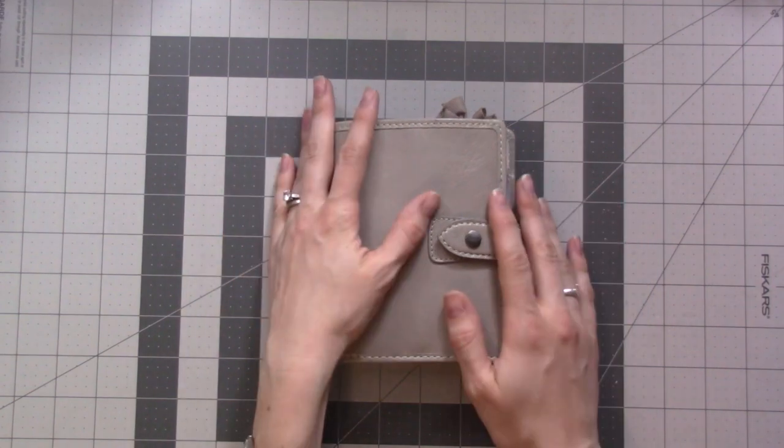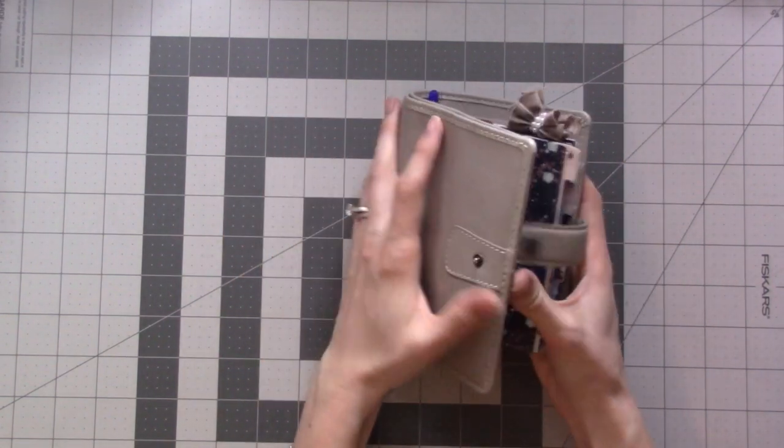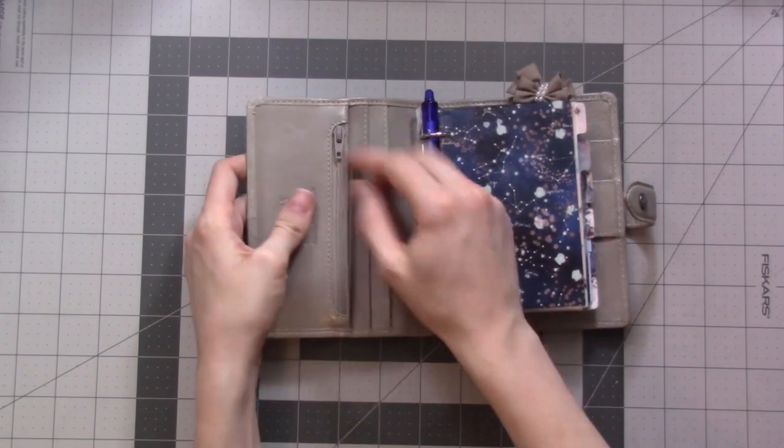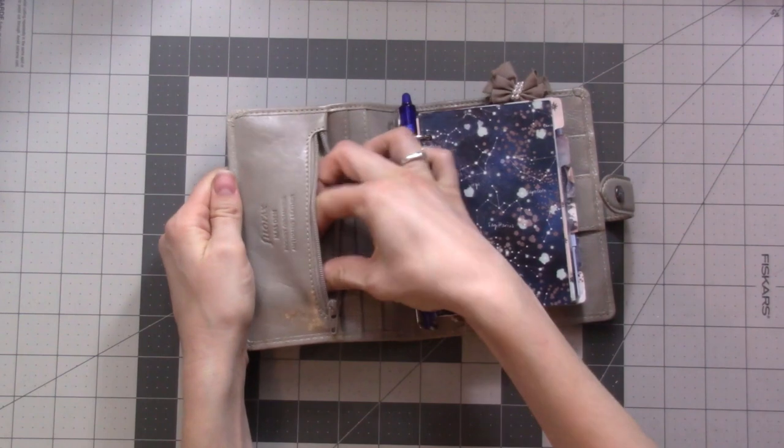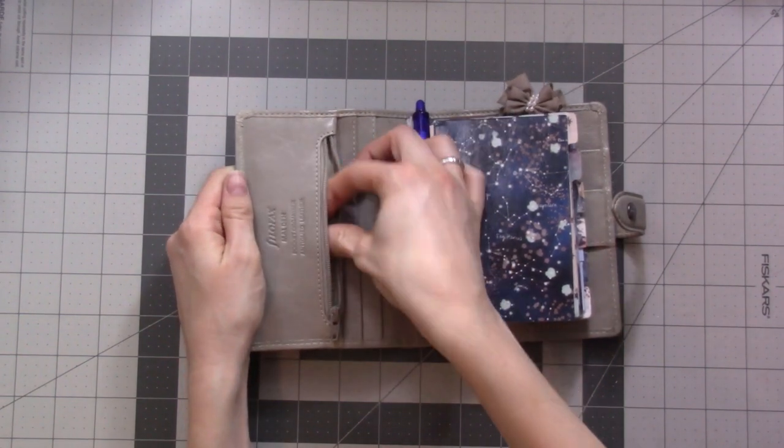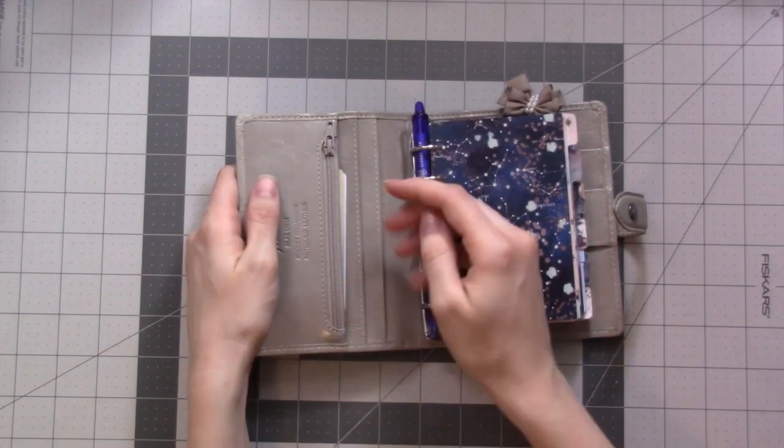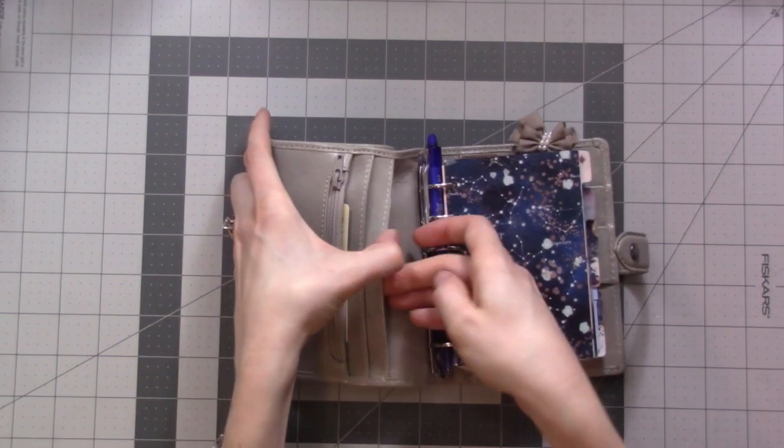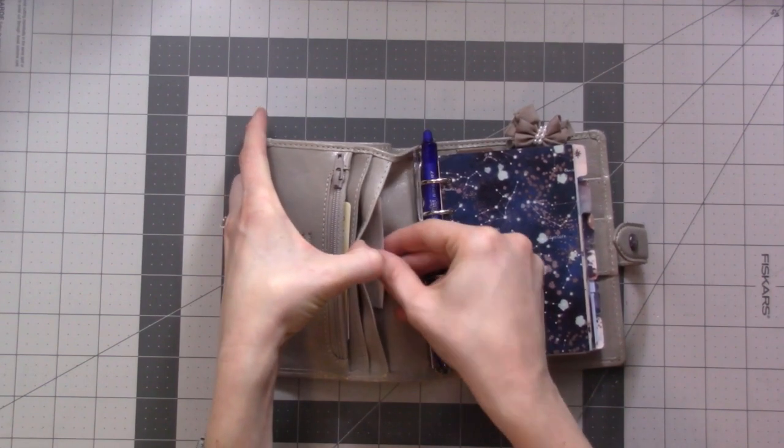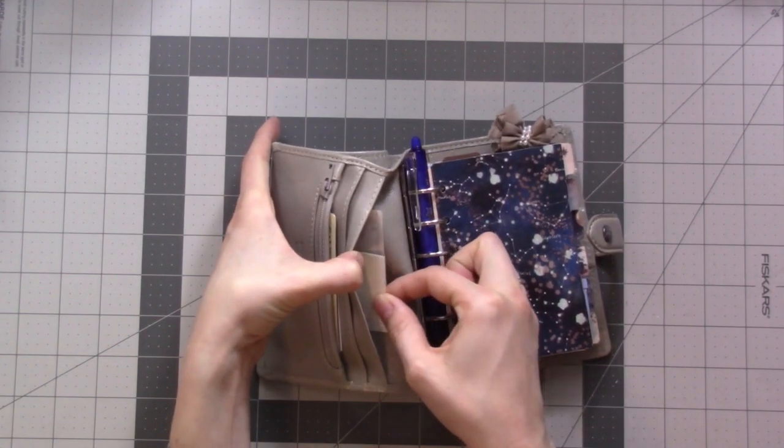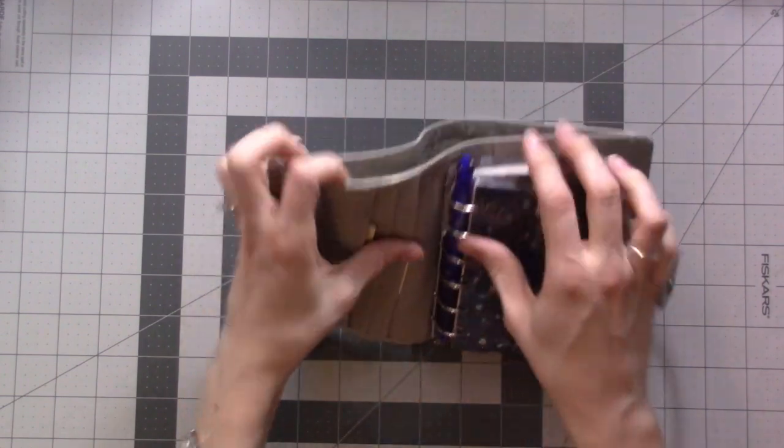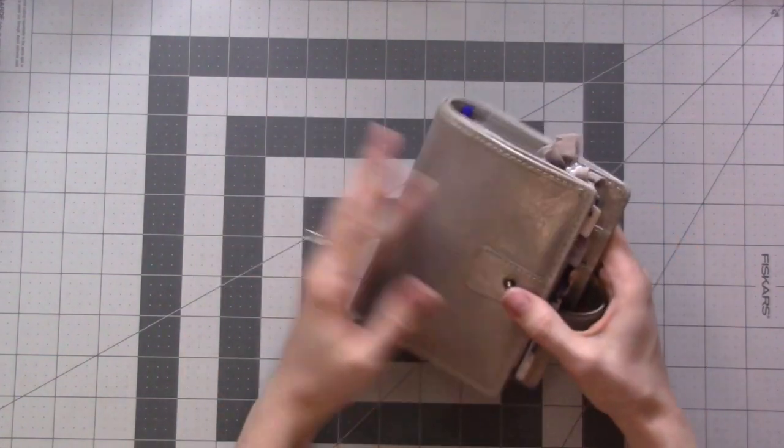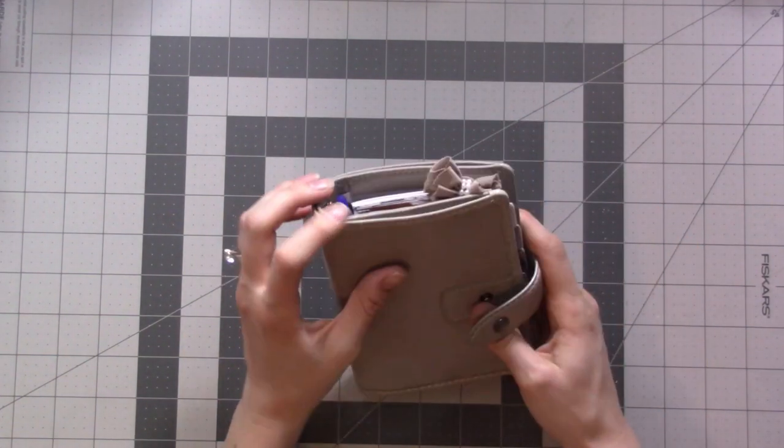Let's take a look. This has all of these wonderful pockets in here. I have my driver's license and a credit card in here, a quarter because I thought I might need it for a grocery cart, a Target gift card, some cash, one check, and some stamps. The cash is in the back.